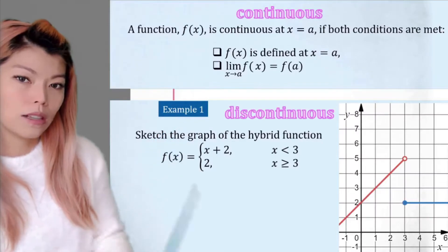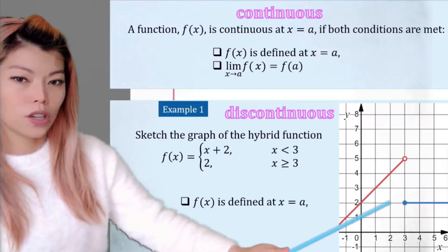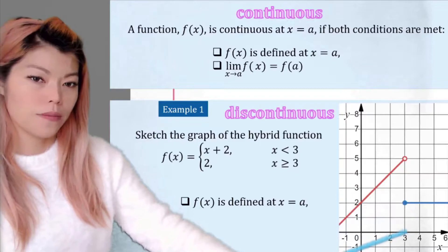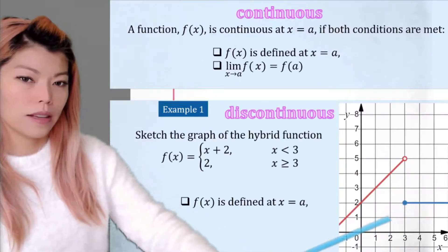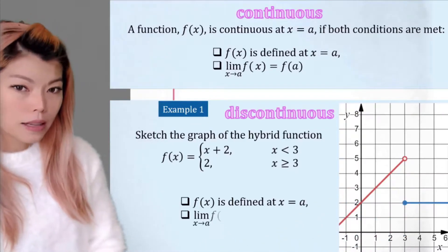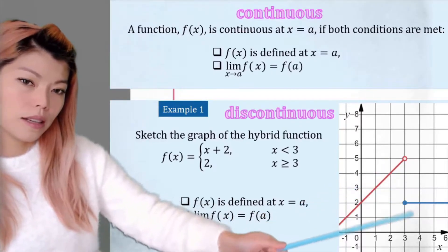We're going to look at these two points. We see that yes, the function is defined at 3, because the function at 3, y is equal to 2.